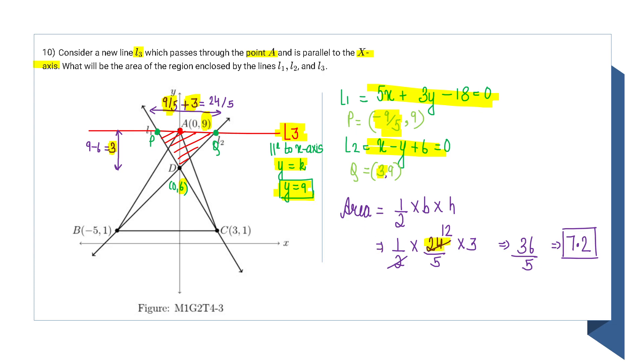Base is calculated, height is calculated, put both values into the formula. You will find the area as 7.2 unit square.